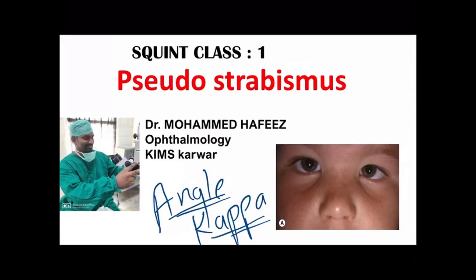Hi everyone, this is Dr. Mohammad Afis from the Department of Ophthalmology, KIM Scarver. Today we will talk about squint. We will start the class with pseudostrabismus, or pseudosquint, where there is actually no squint but the patient appears to be having one. We will also discuss the angle of kappa.